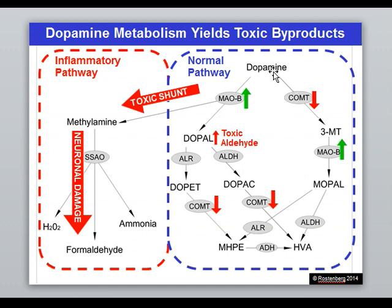Too much dopamine can be a problem because dopamine can go into the inflammatory pathway and turn into things like ammonia, which we're going to talk about. Our goal with treating this is obviously treating the whole person and the other factors involved. But when getting down to specifically treating the COMT problem, we're going to be talking about methyl groups.